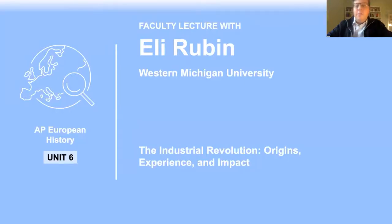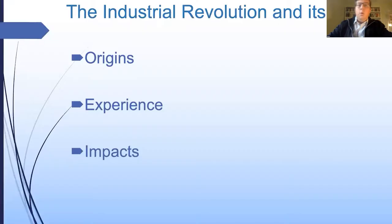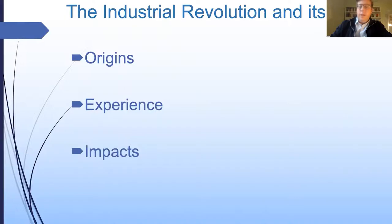Hello and welcome. My name is Dr. Eli Rubin, and I'm a professor of history at Western Michigan University. I am going to be talking today about the Industrial Revolution, a time in the 1700s and 1800s of great economic and technological growth and also great political and social upheaval. We are going to be covering three main topics: first, the origins of the Revolution; second, the experience of those who lived through it; and finally, its impacts on society, politics, and economics.